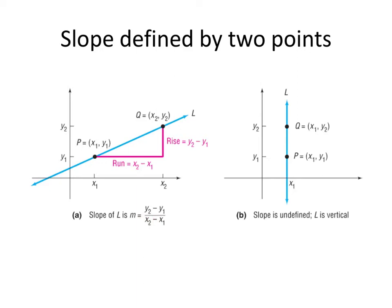That's the only kind of line that doesn't have a slope. Every other line has a slope number associated with it. If the line doesn't have a slope, that means it's a vertical line.